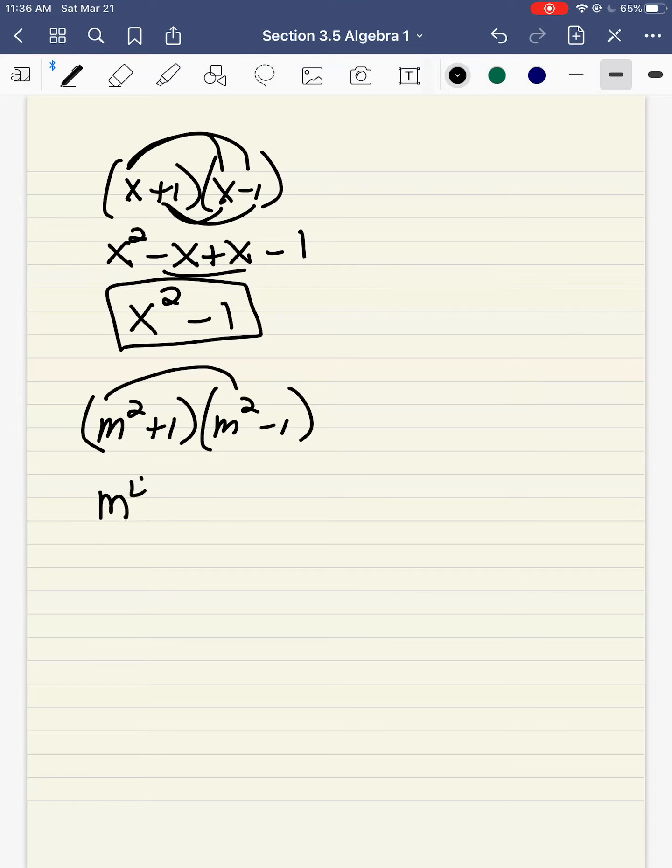m squared times m squared is m to the 4th. m squared times minus 1 is minus m squared. 1 times m squared is plus m squared. 1 times minus 1 is minus 1. Again, the minus m squared and the plus m squared drop out. So this is m to the 4th minus 1.